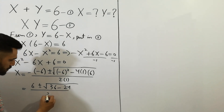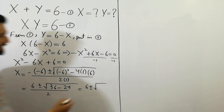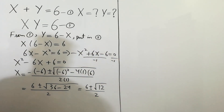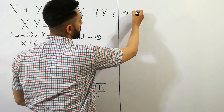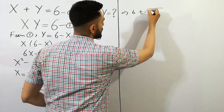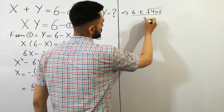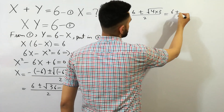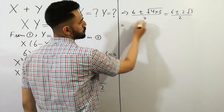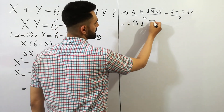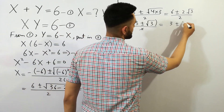Solving, we get x is equal to 6 plus or minus square root of 36 minus 24, divided by 2. That simplifies to 6 plus or minus square root of 12, divided by 2. We can write square root of 12 as 2 square root of 3, so we get 6 plus or minus 2 square root of 3, divided by 2.